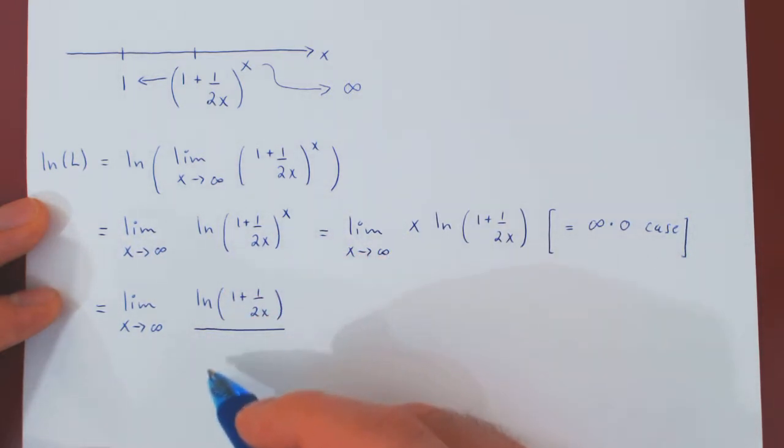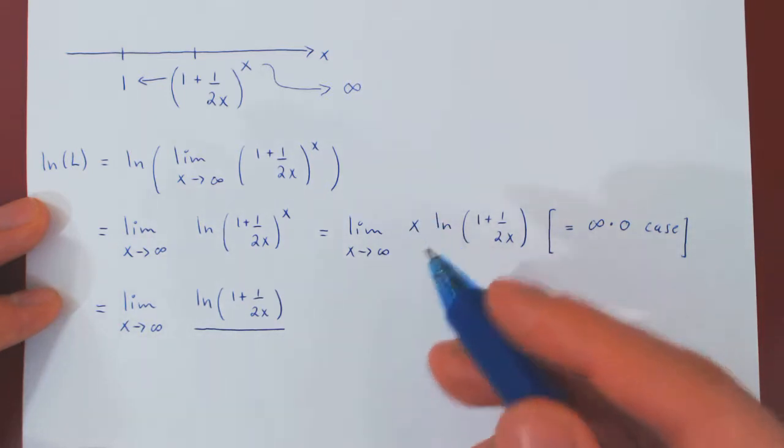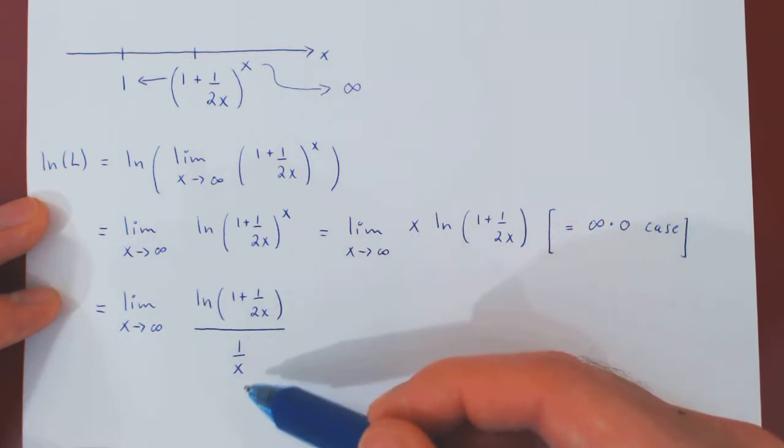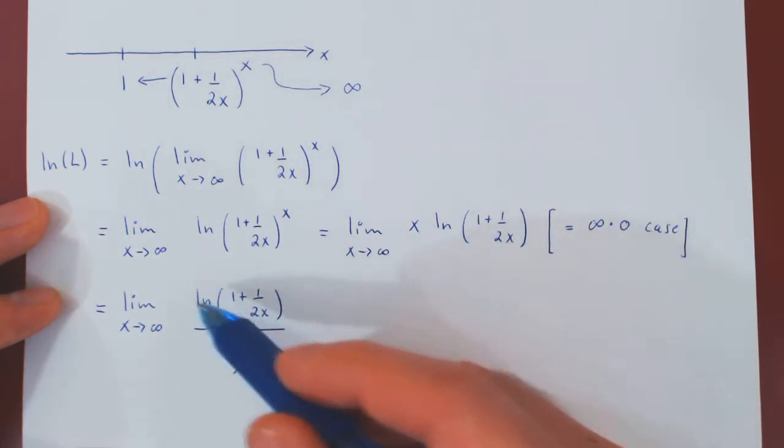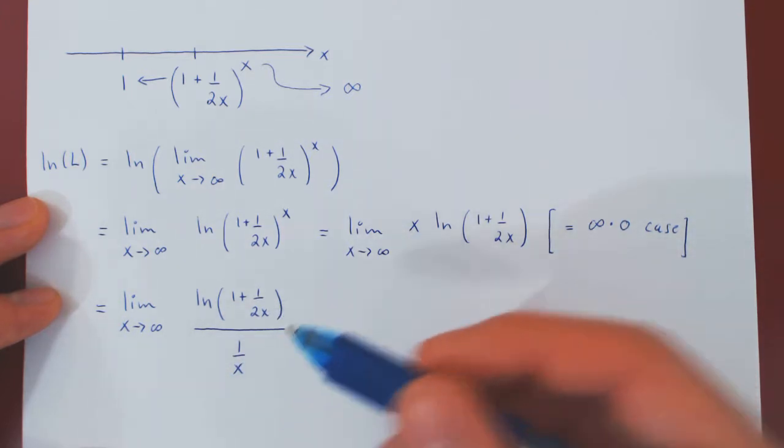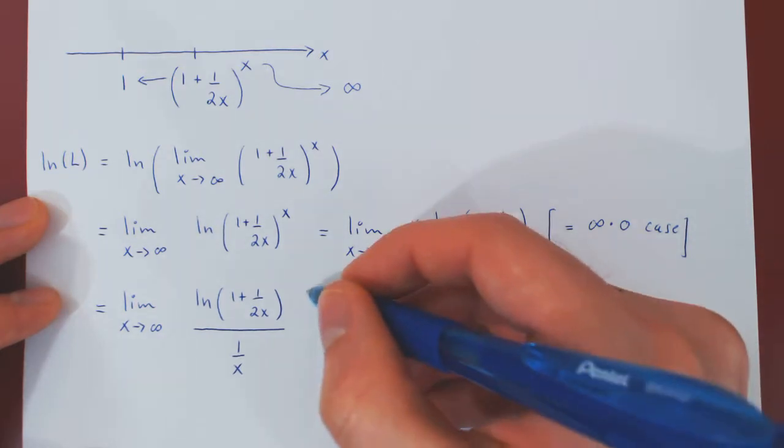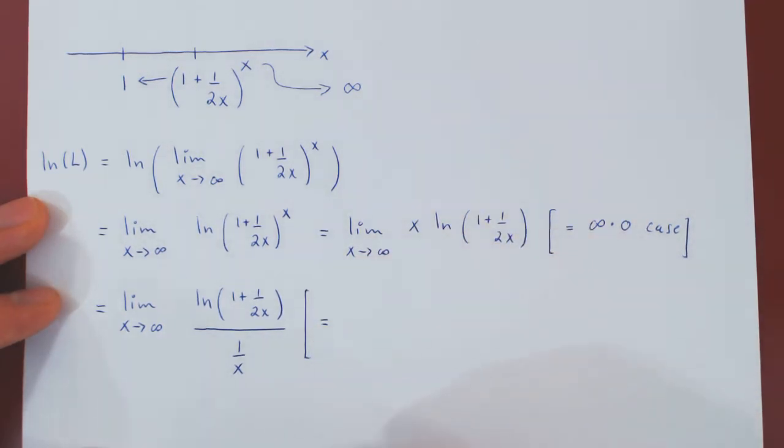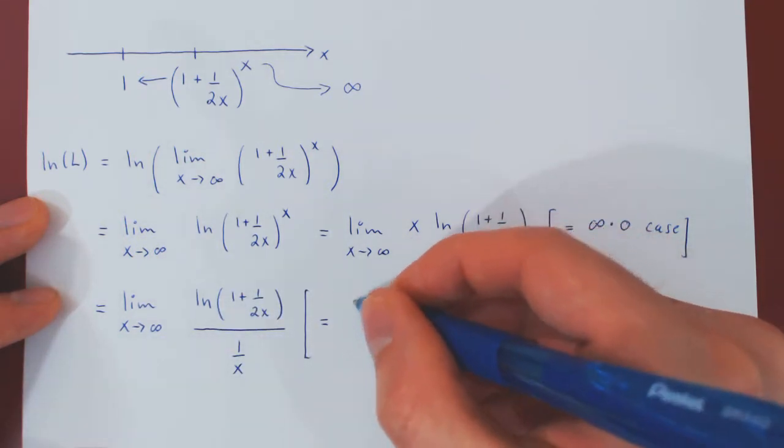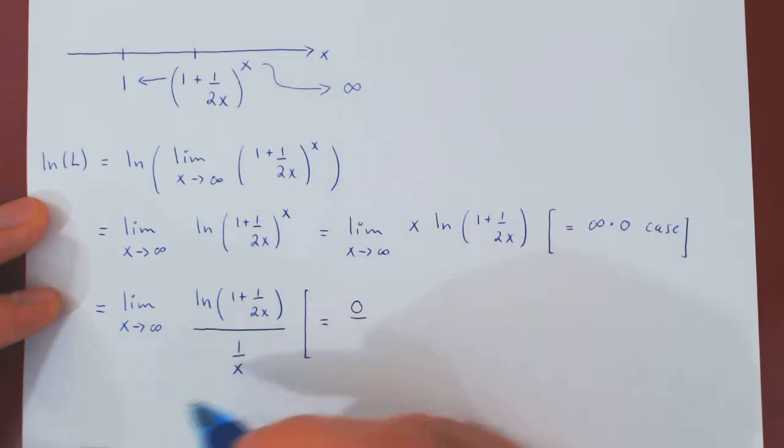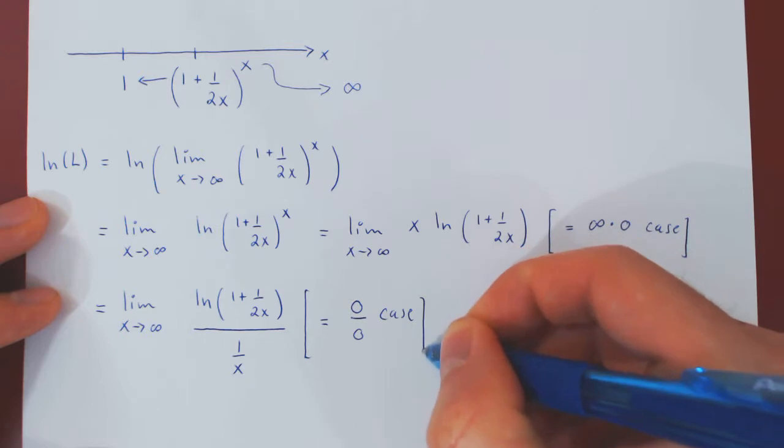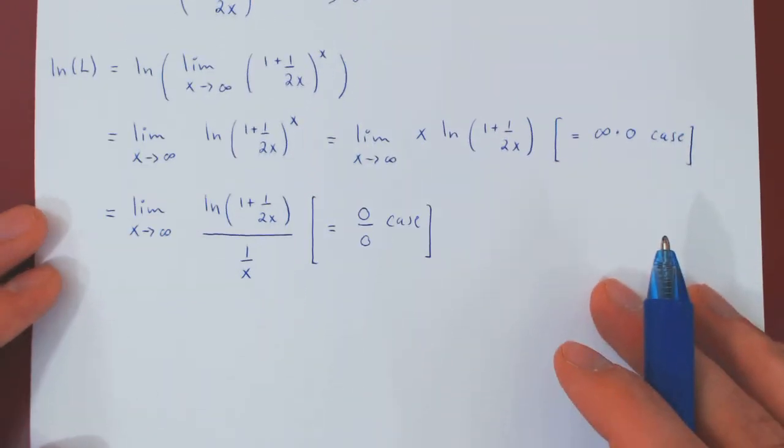And you ask, well, what do we divide ln by to get a times x? Of course, that is 1 over x, as 1 over 1 over x is simply times x. If you divide something by a fraction, you multiply it by the reciprocal, and the reciprocal of 1 over x is simply x. And now the case is interesting. As x tends to infinity, this goes to 0, ln of 1 is 0, over, and as x tends to infinity, 1 over x goes to 0. So we now have, after a little bit of work, a 0 over 0 case, so we can now apply L'Hôpital's rule.